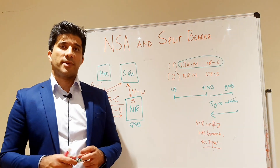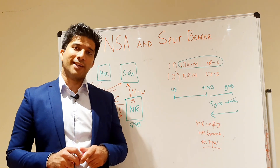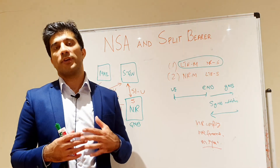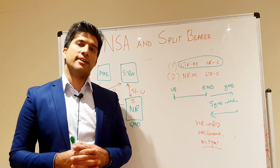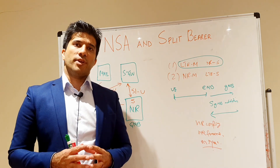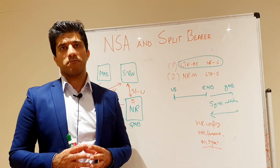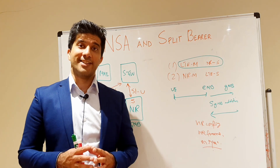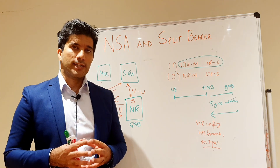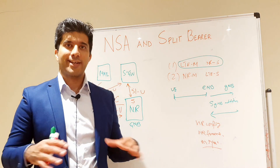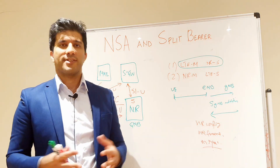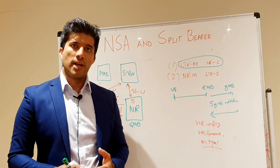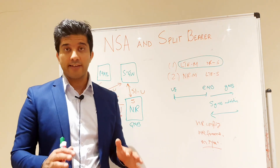After that RRC reconfiguration message, the UE sends an RRC reconfiguration complete. Then RACH signaling starts — the UE sends the RACH messages — and in the end the secondary gNodeB is added. The UE can then interact with the 5G node for its data as well as with the LTE node. We are not yet discussing how that data would be split — that will come in the next part.